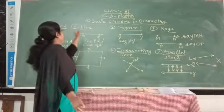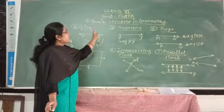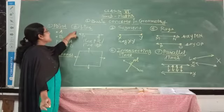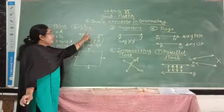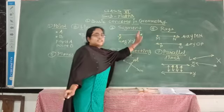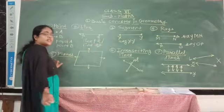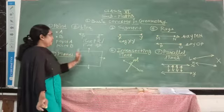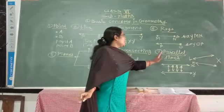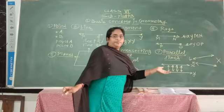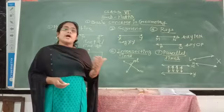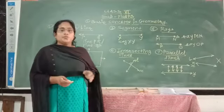To summarize, there are seven basic concepts in geometry: the first is point, the second is line, the third is segment, the fourth is ray, the fifth is plane, the sixth is intersecting lines, and the seventh is parallel lines. In the next period, we will learn about the next part of this chapter. Goodbye!